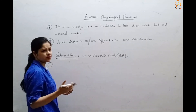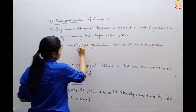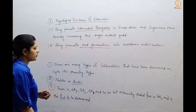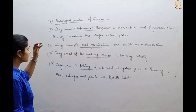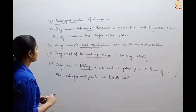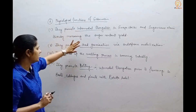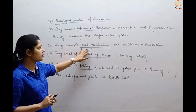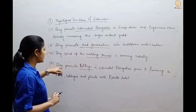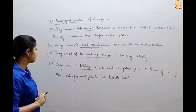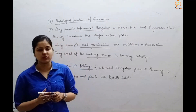To summarize the physiological functions of gibberellins: they promote inter-nodal elongation in grape stalks and sugarcane stem, increasing sugar content; they promote seed germination via endosperm mobilization; they speed up the malting process in the brewing industry; and they promote bolting — inter-nodal elongation prior to flowering — in beet, cabbages, and plants with rosette habit.